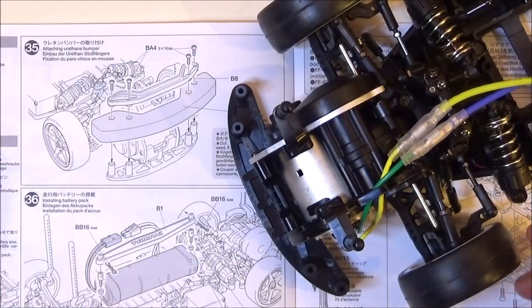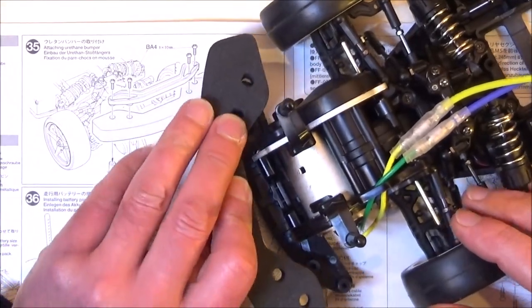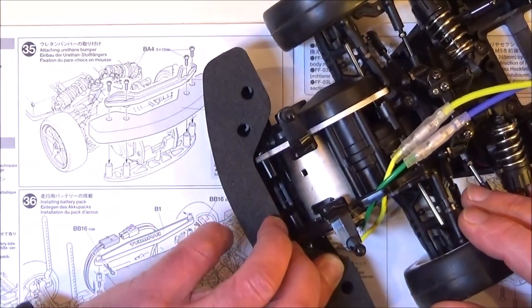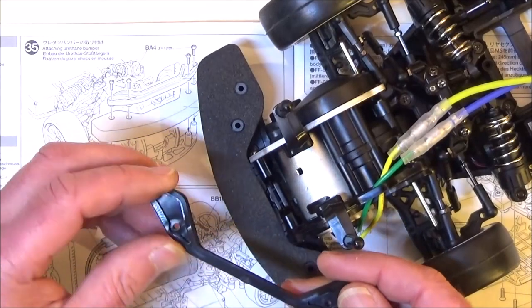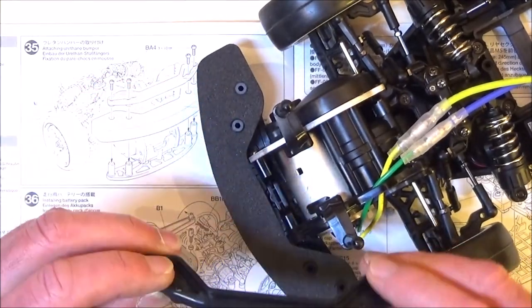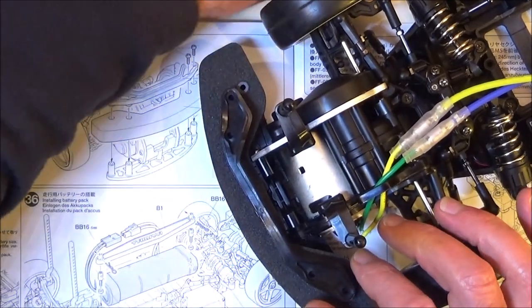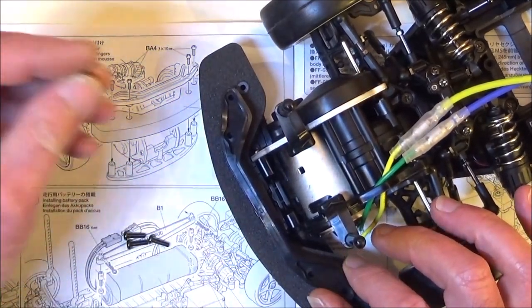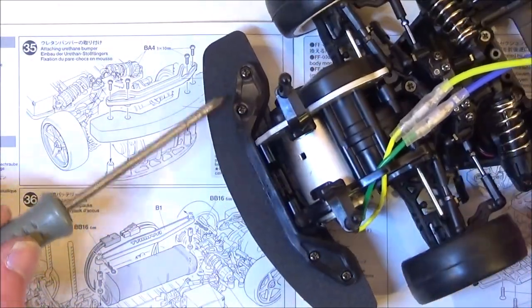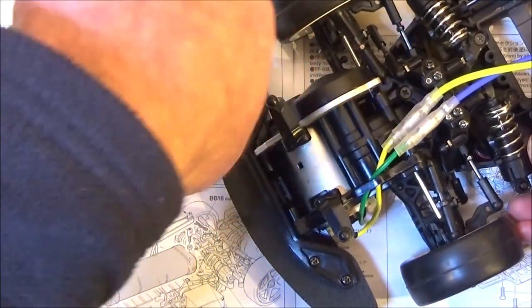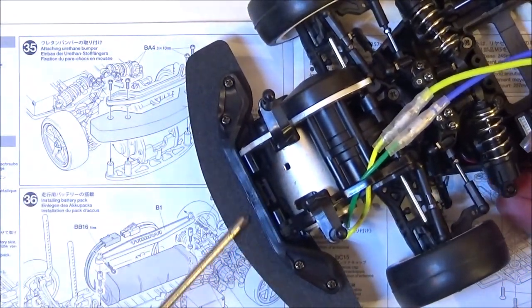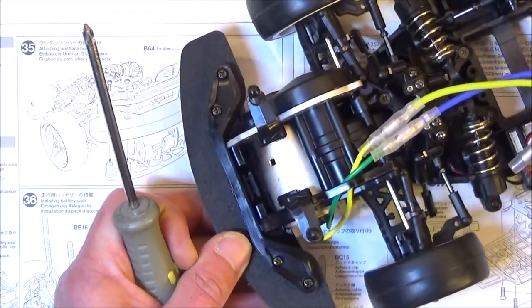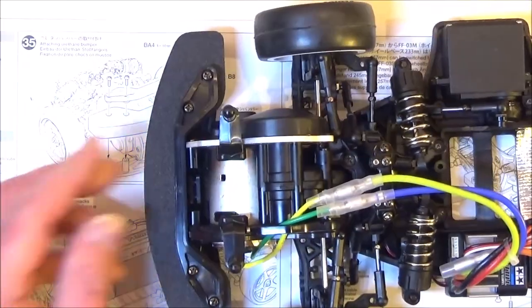When you've got all four wheels on, step 35 is getting your urethane bumper. Just pop it over those posts on the front, and then you need part B8. This looks like it only goes one way, with the ridge sticking upwards, and then we attach that with those four 3x10 screws. You only need to really lightly nip these up because the plastic you screw into is very soft and they spin really easily, so don't go mad with those. We might have to trim this bumper down later, but I won't find that out till I get the body on, so at the moment I'll leave it as it is.